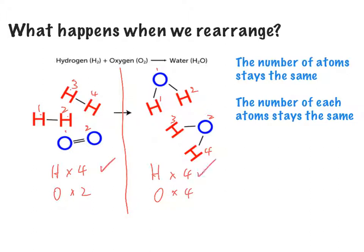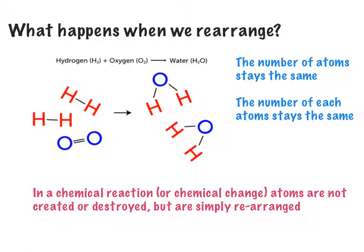This number and this number are the same — the atom counts on both sides match. We've changed hydrogen and oxygen gas into water, and water is different to hydrogen and different to oxygen gas, so we must have a chemical change. As we can see, chemicals are not created or destroyed — we don't discard them. We simply rearrange them, and that's all we ever do.